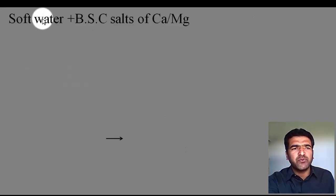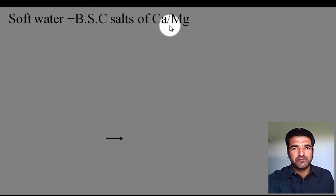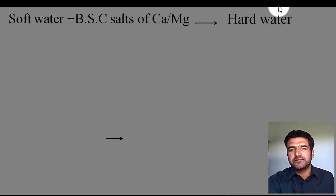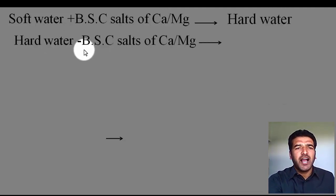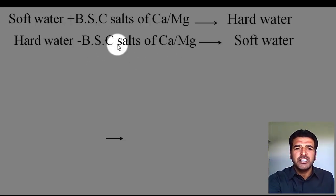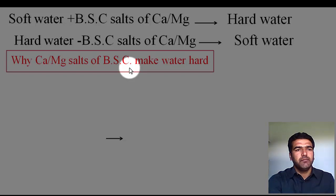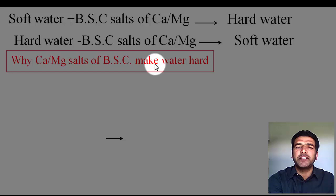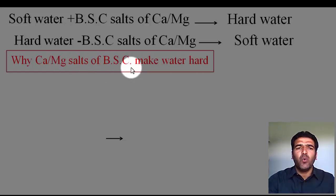So what we conclude: if you have soft water and you add bicarbonate, sulfate, and chloride salts of calcium and magnesium, your water will become hard. On the other hand, if you have hard water and you remove these salts — bicarbonates, sulfates, and chlorides of calcium and magnesium — your water will become soft. The easiest way to produce soft water from hard water is to remove these six salts. But the question is: why do calcium and magnesium salts — bicarbonates, sulfates, and chlorides — make water hard?